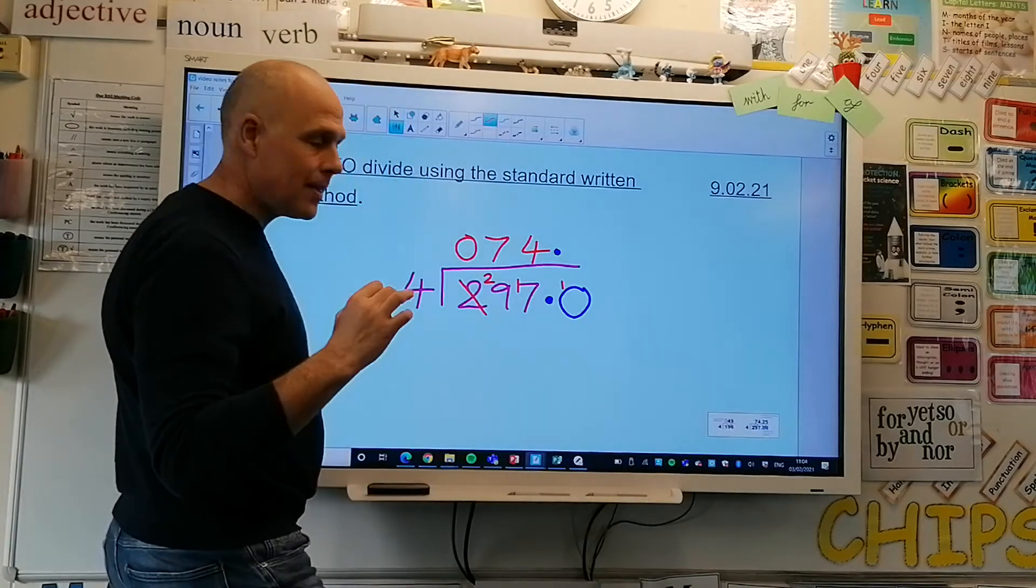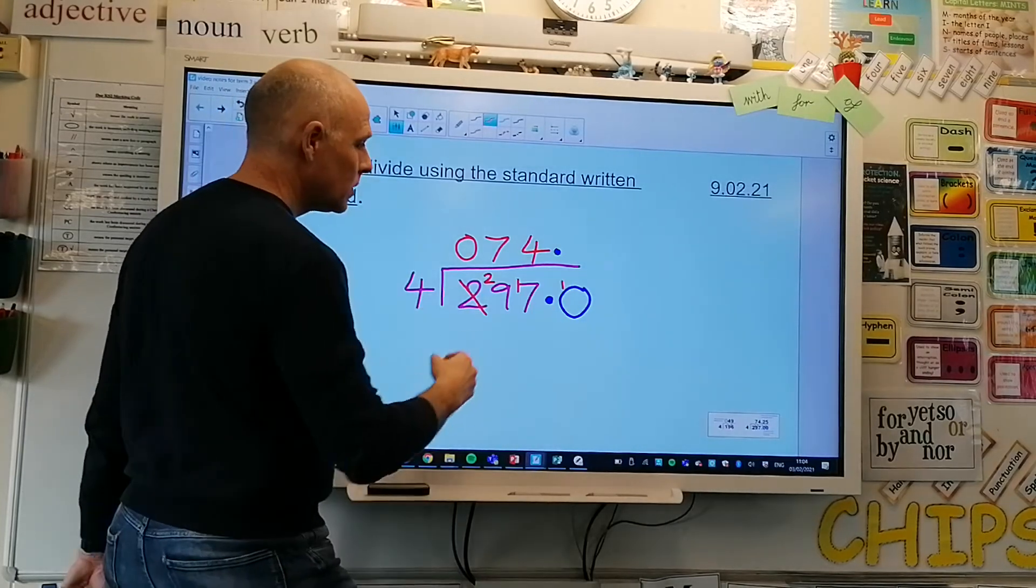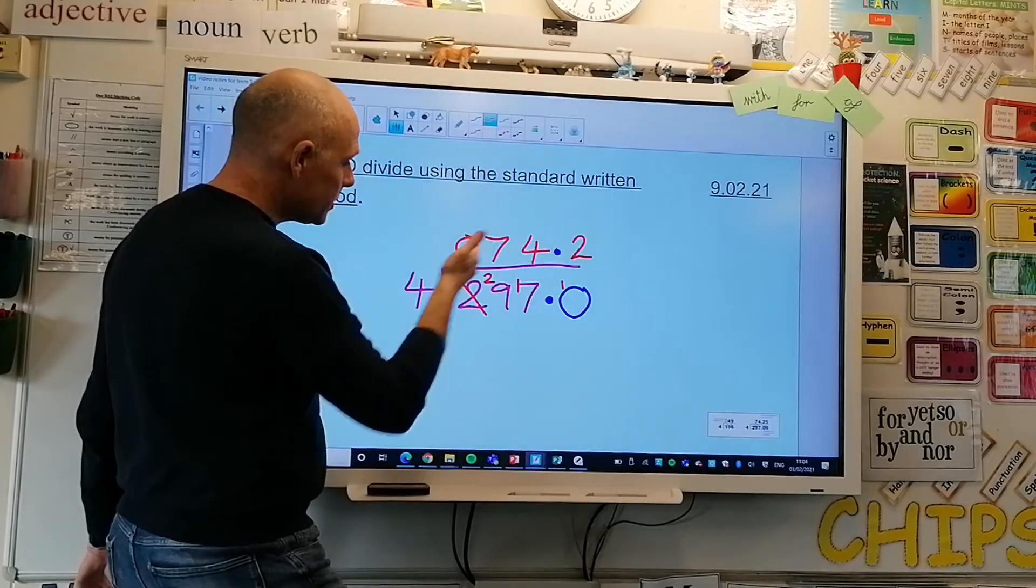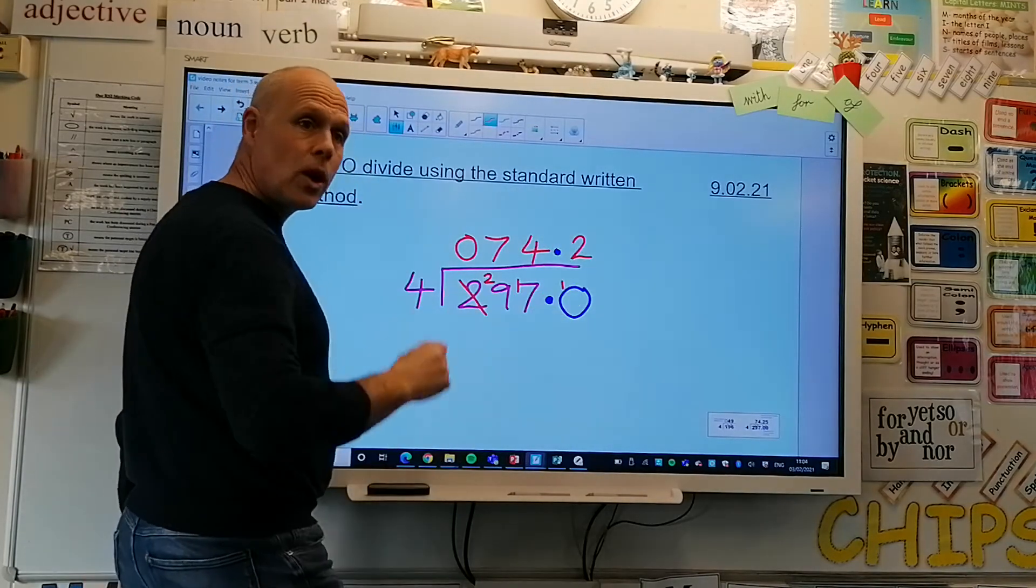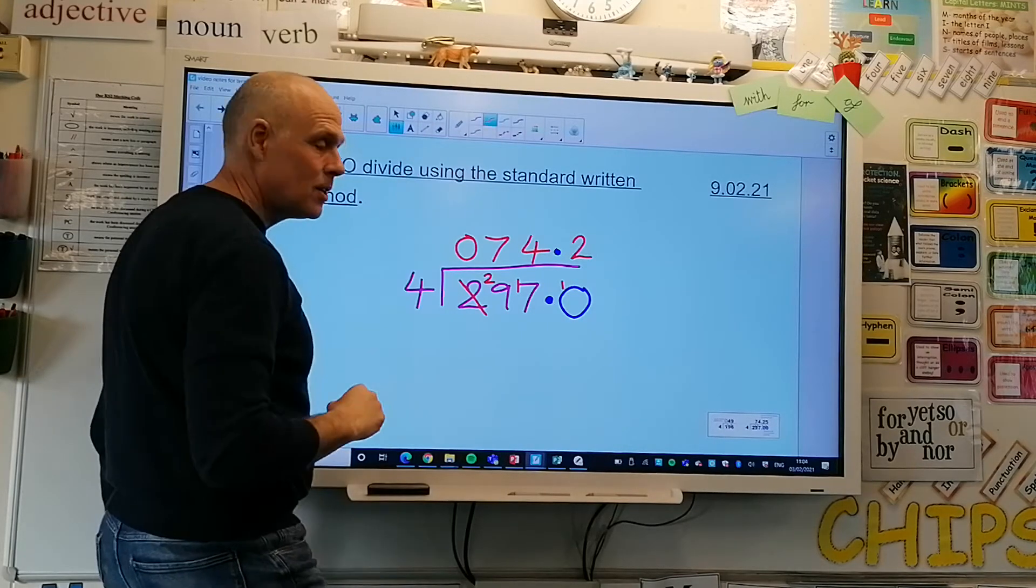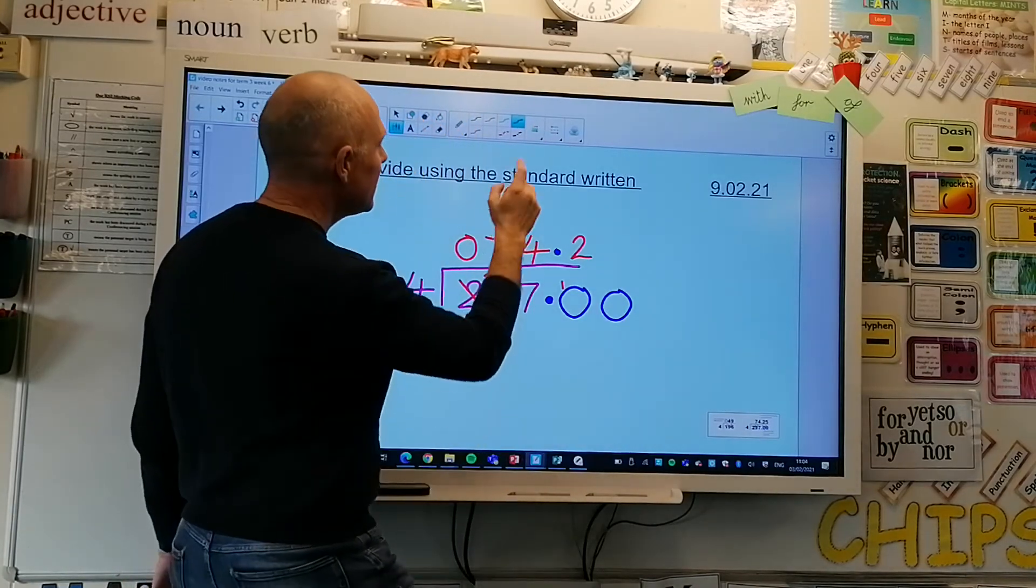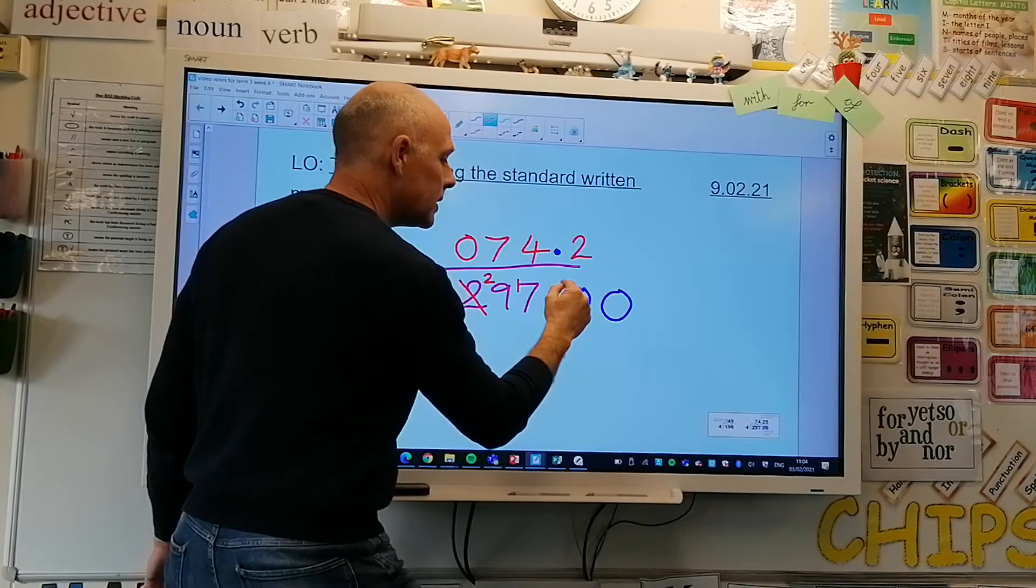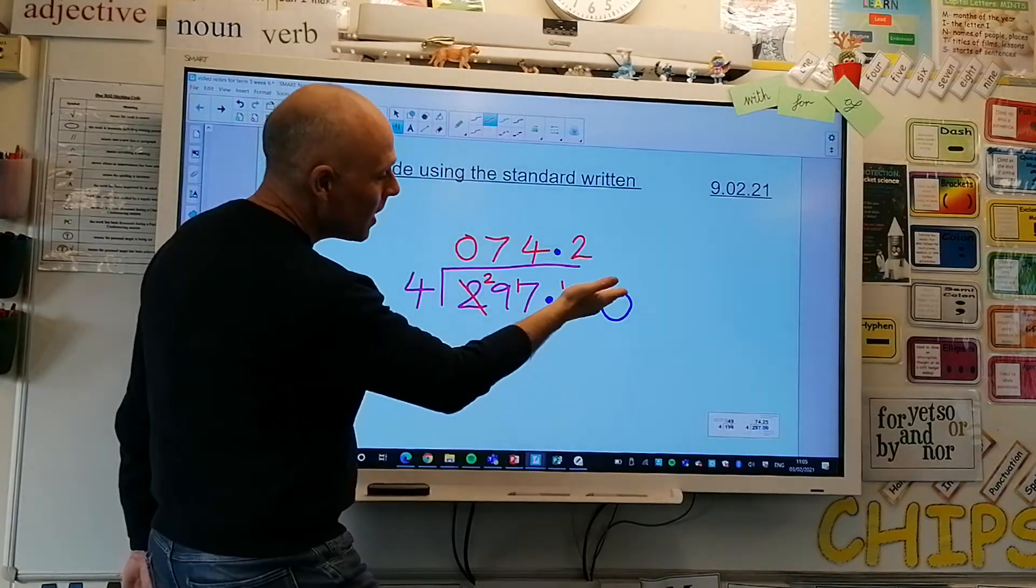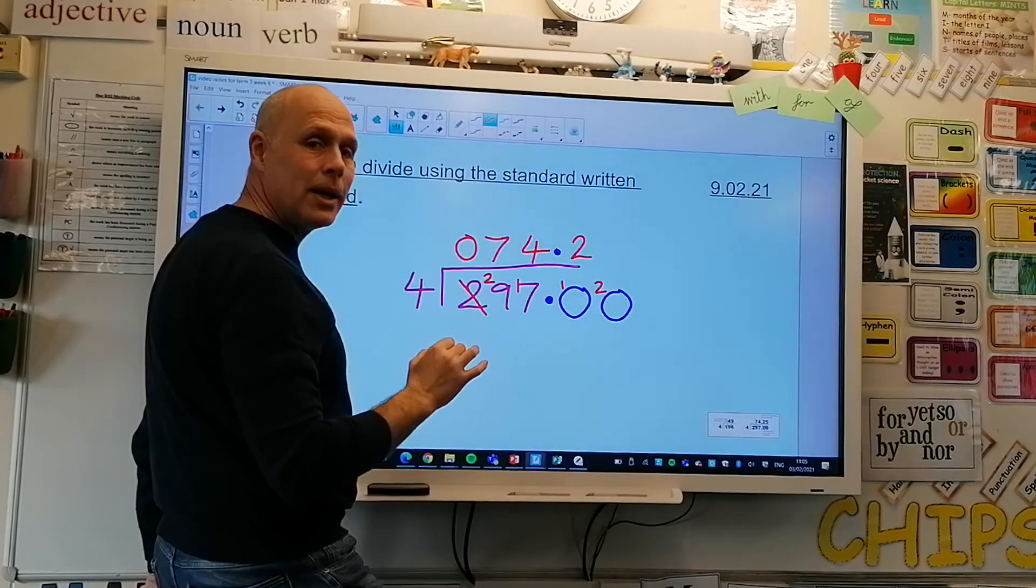Let's write it in. Use your multiplication skills to check. 2 times 4 is 8, therefore I've got how many left to exchange? Two. Now I need to make sure I put my zero in place and then I can bring across and exchange the 2 tenths that are left over for 20 hundredths. I've got 20 here now shared between 4 equally will give me...